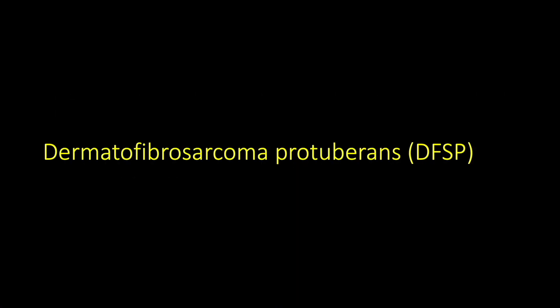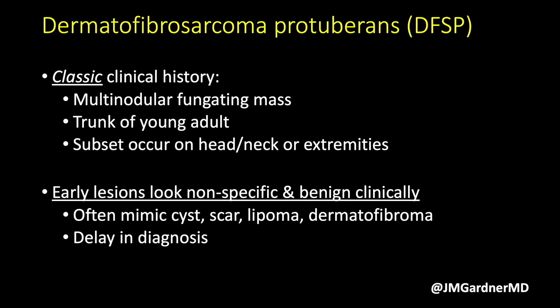Let's actually look at DFSP. The classic clinical history is a multi-nodular fungating mass on the trunk of a young adult, but it's important to note that they are not always on the trunk. They can be on the extremities, and they can be relatively common on the scalp or the face — unfortunately a significant subset occur there.